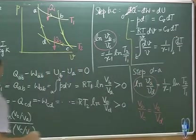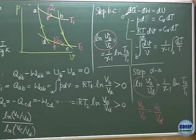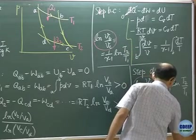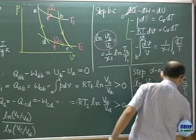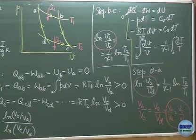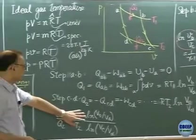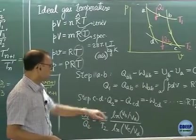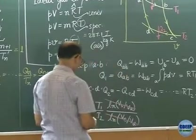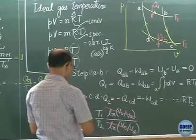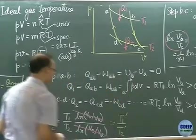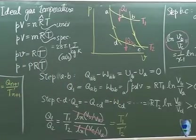And what we want is vb over va which gives us vb over va equal to vc over vd, and that we bring it back to this equation. Q1 by Q2 times is equal to T1 by T2 times the ratio of log of those volumes that drop out. So, we get Q1 by Q2 equal to T1 by T2 is equal to T1 prime by T2 prime from second law. The way we have defined absolute temperature.